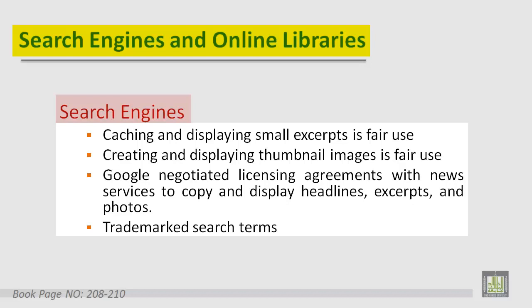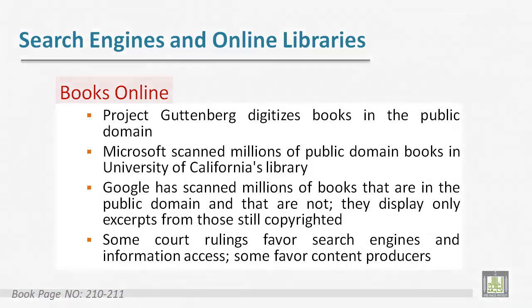In response to similar lawsuits and disputes with other news services, Google negotiated licensing agreements to copy and display headlines, excerpts, and photos. Now, the Books Online Project Gutenberg digitizes books in the public domain. Two large companies, Microsoft and Google, work on this.